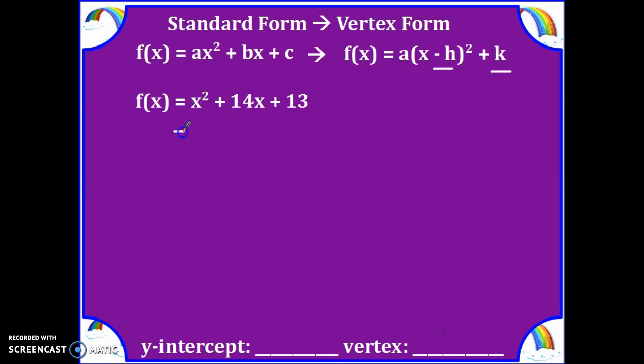The first thing we're going to do is move our constant, keeping it on the same side as the quadratic and linear term, but just move it down to make room to create that perfect square trinomial.